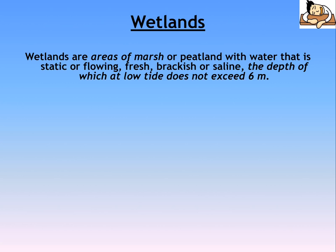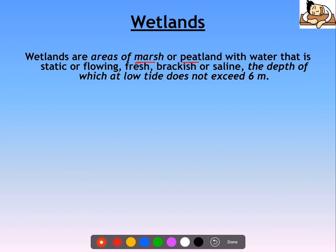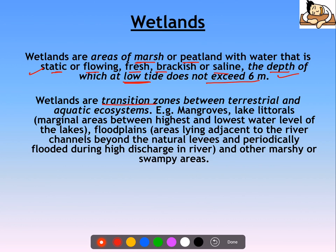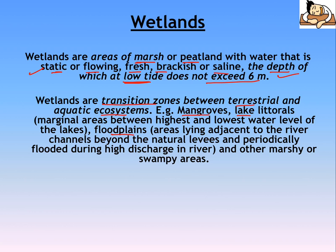What are wetlands? They are areas of marshy or peatland with water that is static or flowing. The most important condition is that the depth of the water body at low tide should not exceed 6 meters. This is the criteria for classifying any water body as a wetland. They are transition zones between terrestrial and aquatic ecosystems — examples include mangroves, lake littorals, and floodplains.